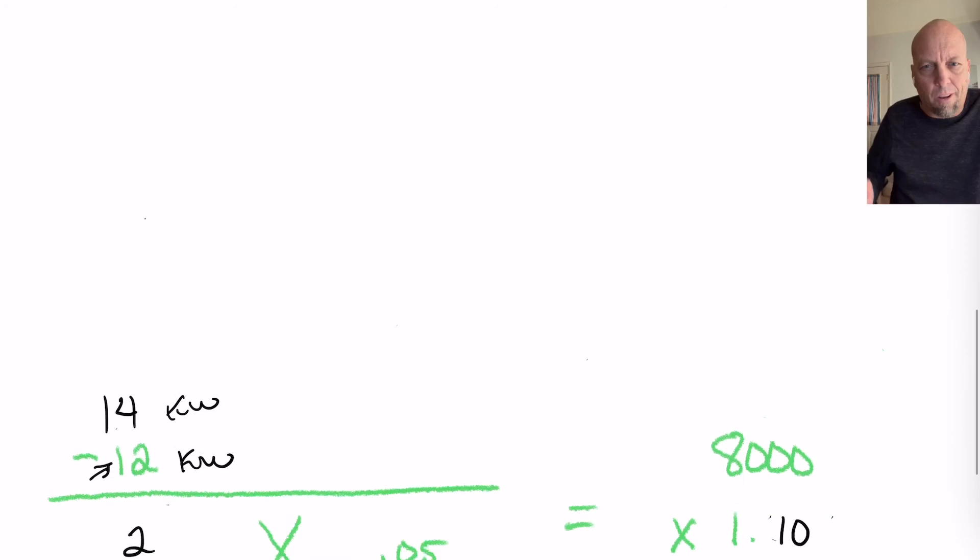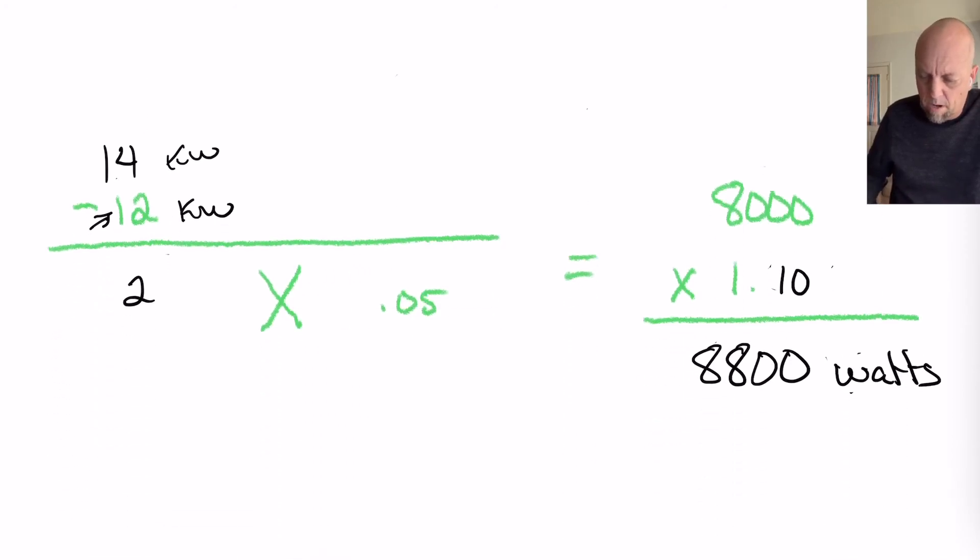That right there, 8,800 watts is what we got up here, doing the longer version of this formula. There again, if you want to convert it into kilowatts, move the decimal three places to the left, and it will be 8.8 kW.